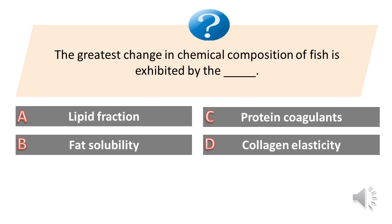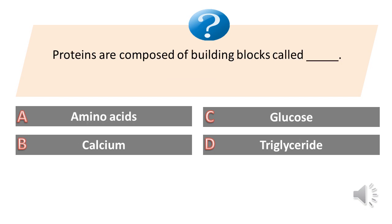The greatest change in chemical composition of fish is exhibited by the: A. Lipid fraction. B. Fat solubility. C. Protein coagulants. D. Collagen elasticity. Answer is A. Lipid fraction.